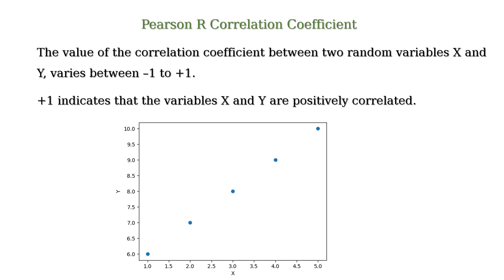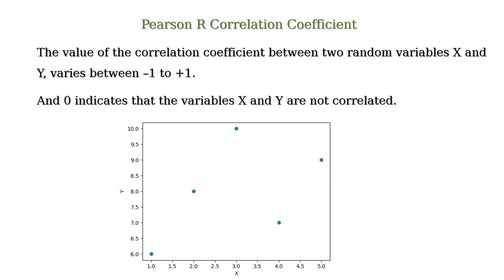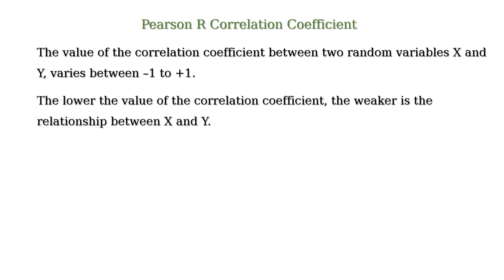And 0 indicates the variables x and y are not correlated. For example, in this graph, x and y are not correlated — these two variables have a correlation coefficient of 0. Lower the value of the correlation coefficient, weaker is the relationship between x and y.